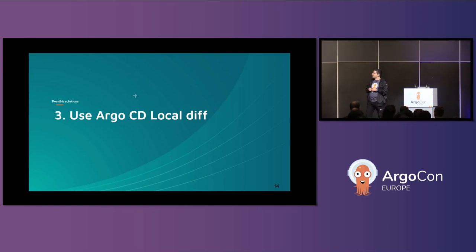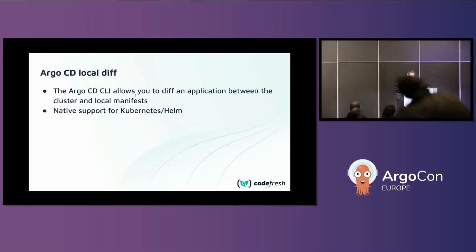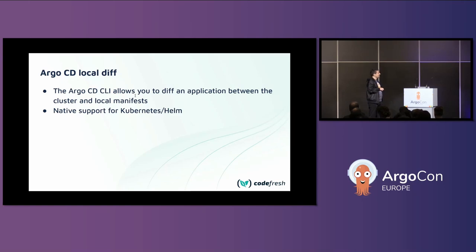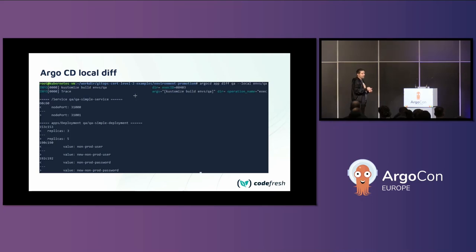The second option is the Argo CD CLI. Quick question: how many of you know the Argo CD CLI diff command? How many know the `--local` argument? Some people but not many. This is one of the features not advertised very well. There is the basic diff command that lets you see the same thing in the CLI, but the big thing is the `--local` argument, which lets you compare what's in the cluster against any file not in a git repository — something you have locally on your workstation. You can create a manifest quickly on your laptop and see what the changes are.